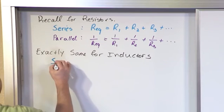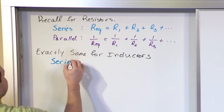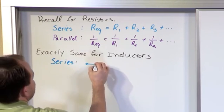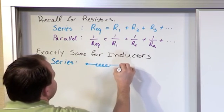So for instance, if I have a bunch of series inductors, something that might look like here's inductor 1, here's inductor...